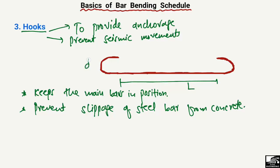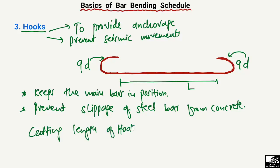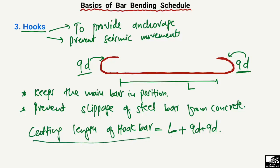Considering a general hook of length l, the hook length on each side should be equal to 9 times d, where d is the diameter of the bar. So the total cutting length of the hook bar will be: l plus 9d plus 9d, giving a total cutting length equal to l plus 18d. This is the way to find out the total cutting length of the hook bar.